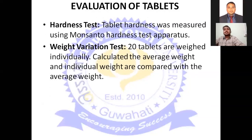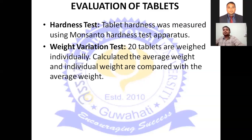After preparation of the tablet, we are going for the evaluation of tablets. The first evaluation is hardness — the hardness of the tablet is characterized by the Monsanto hardness tester. I have shown in the video how we can calculate the hardness through the Monsanto hardness tester.